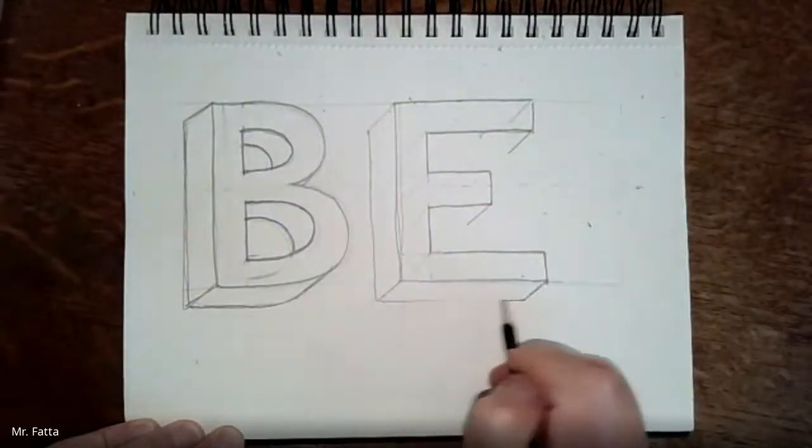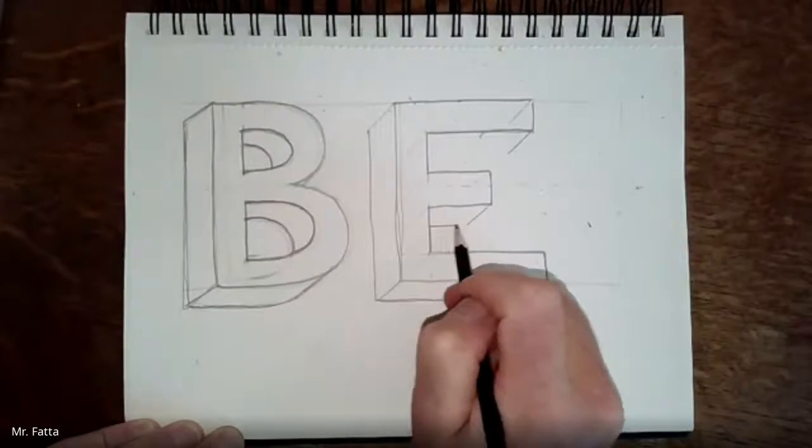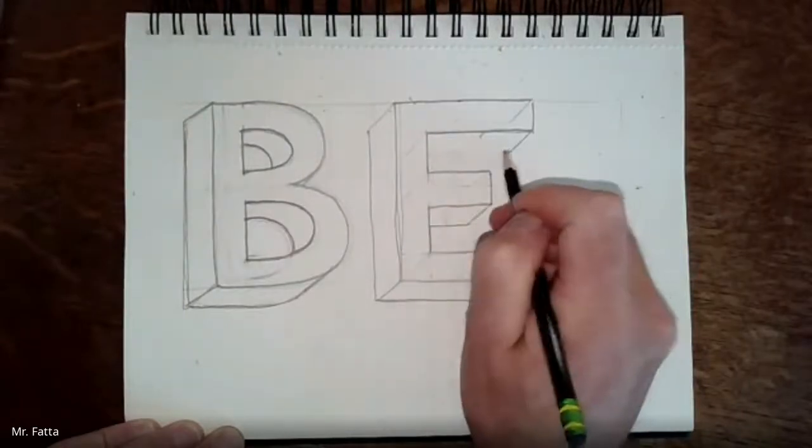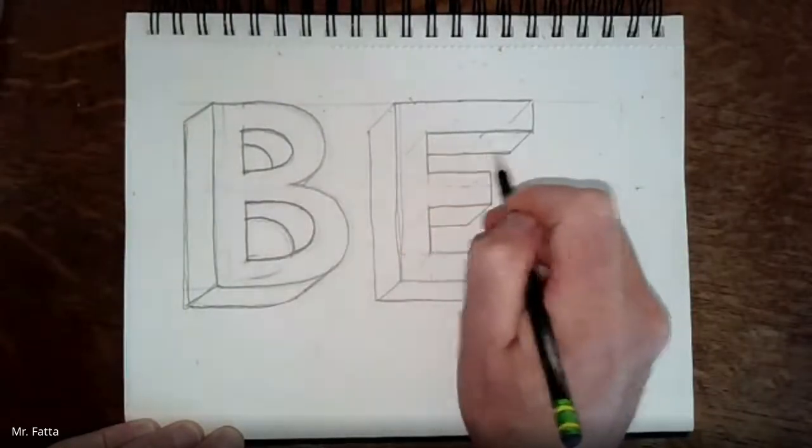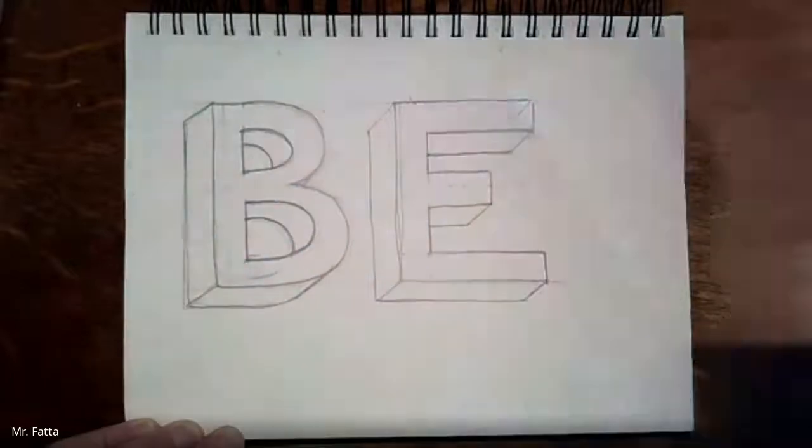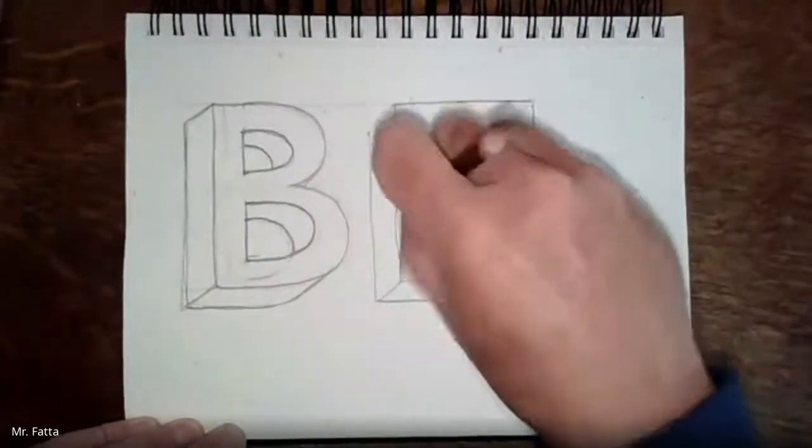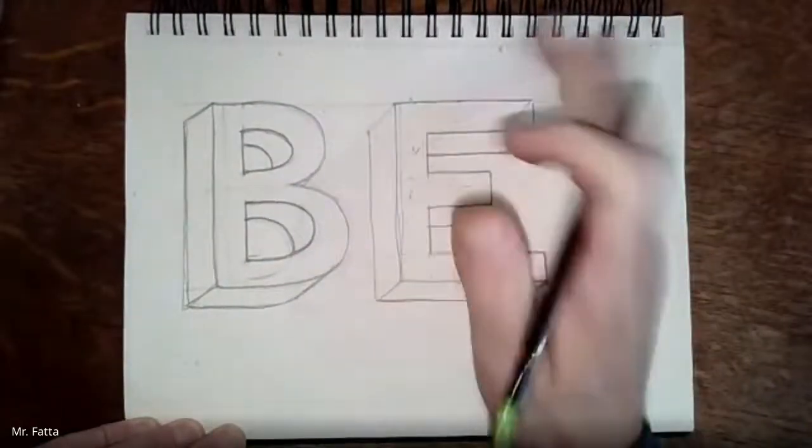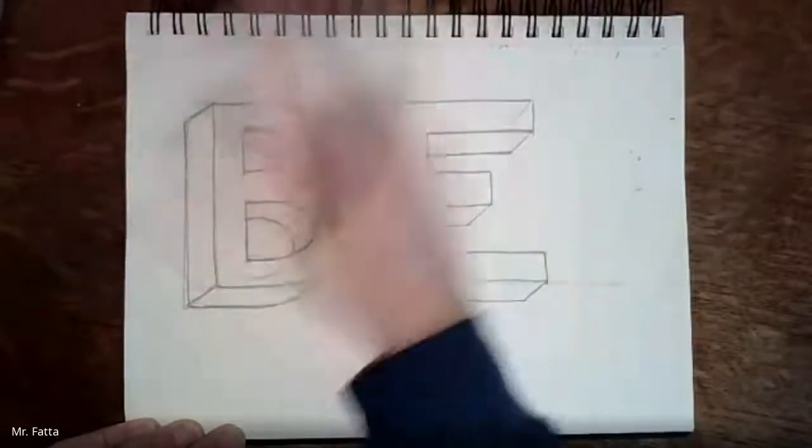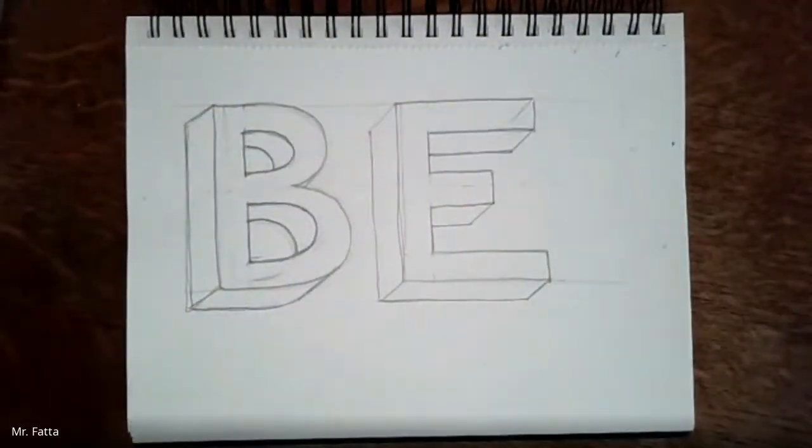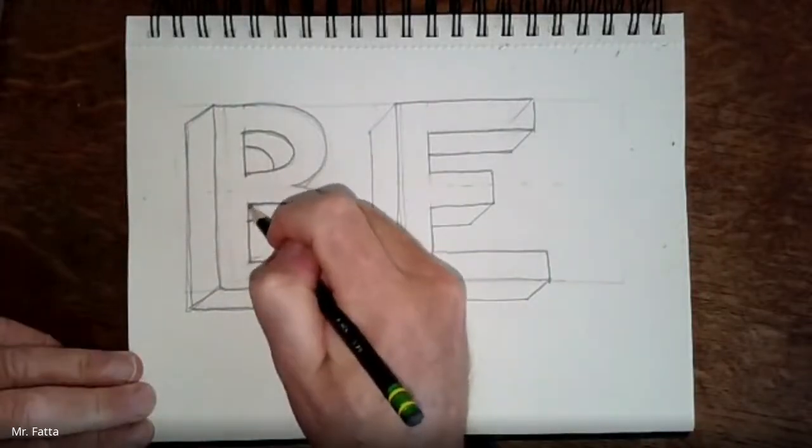And now here's the E, which is pretty easy. Just parallel lines, no trouble at all. So give yourself a challenging letter like a curved letter, and then a less challenging letter like a rectangular letter. E is definitely the easiest one because it's not even angled; there's no angles to it.